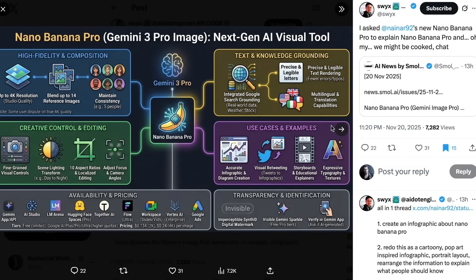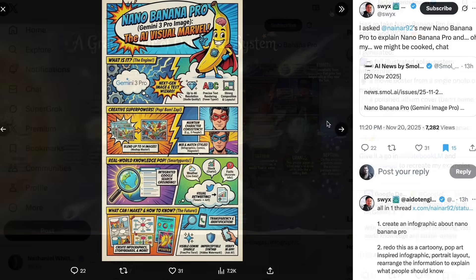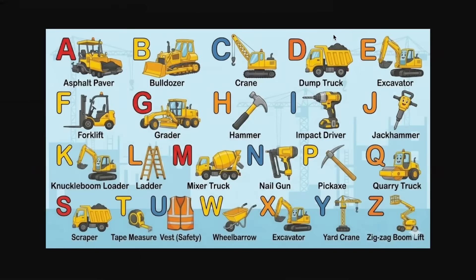Swix went meta and asked Nano Banana Pro to explain Nano Banana Pro — he got it two ways: one as an academic infographic, and another as a literal classic comic strip. I'm also seeing a ton of parental use cases. Google's Jacqueline Konzelman created a gorgeous tour of our solar system that looks like the type of poster you'd put on a three- or four-year-old's wall. I have a four-year-old learning to read who is very much into construction equipment, so I put together an alphabet chart based on that theme. If you've ever tried to do something like this, you'll know it was nearly impossible before — and genuinely impossible to get it with no errors without specifying all the different elements. I didn't have to tell it to put an asphalt paver for A or a bulldozer for B; I just told it I wanted an alphabet chart with these themes, and it figured out the rest.